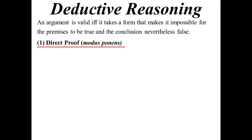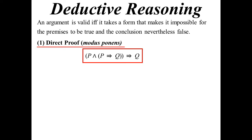Direct proof is the one you're used to working with, known as modus ponens. Using our symbolic notation, that's pretty much the condition for a direct proof. What it's basically saying is: you have P, and you know P implies Q, then you can conclude Q. If you know that condition and you've got P, therefore you must have Q.